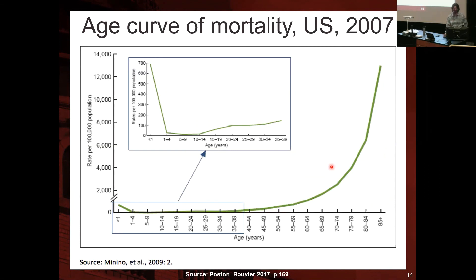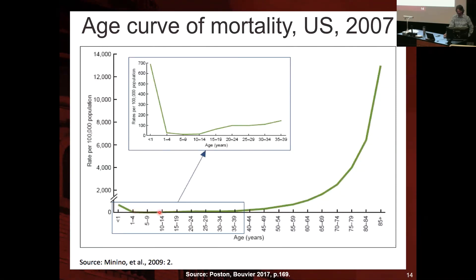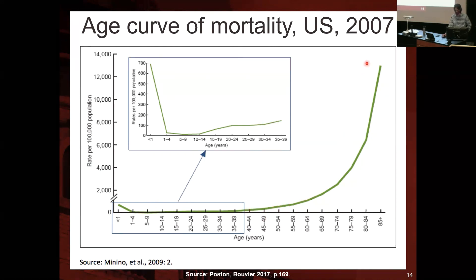Mortality is higher among younger children — those before reaching age one. Once children reach one year of age, the mortality rate declines a lot and gets more stable over time, then increases at older ages. If you zoom into the middle age groups, there are still some variations — it drops, then in teenage years and young adulthood it starts to increase again, then keeps increasing at older ages.